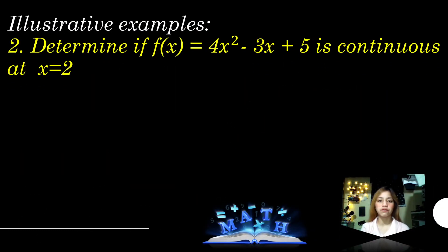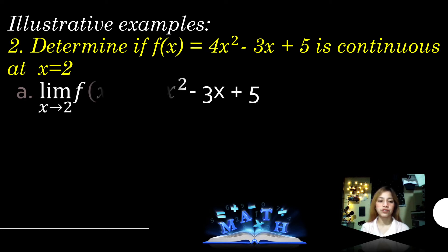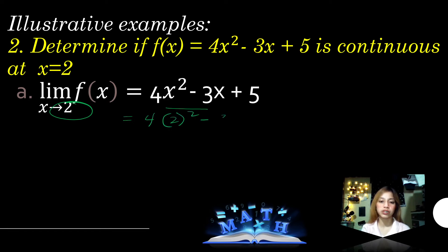For example, number 2: determine if 4x² - 3x + 5 is continuous at x = 2. Checking the first condition, let's find the limit. We can use the substitution method, substituting c = 2 as the value of x. So: 4(2)² - 3(2) + 5 = 4(4) - 6 + 5 = 16 - 6 + 5.